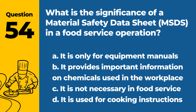Question 54. What is the significance of a Material Safety Data Sheet (MSDS) in a food service operation? a. It is only for equipment manuals. b. It provides important information on chemicals used in the workplace. c. It is not necessary in food service. d. It is used for cooking instructions. Answer: b. It provides important information on chemicals used in the workplace. An MSDS is important for safety and compliance.